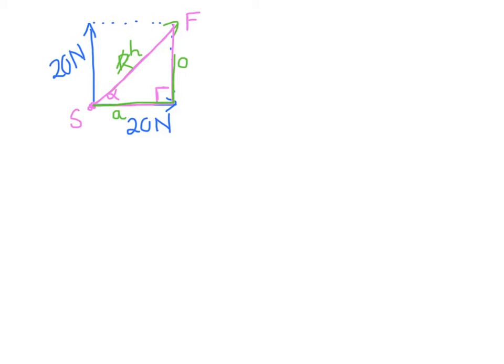So you would then be able to say, I know because it's a parallelogram that the opposite is 20, the adjacent is 20, and therefore, if I'm looking for the hypotenuse, I can use Pythagoras. So I can say the square on the hypotenuse is equal to the sum of the squares of the other two sides. So I'd go 20 squared plus 20 squared is equal to h squared.